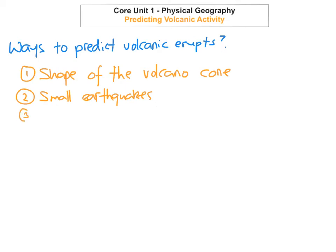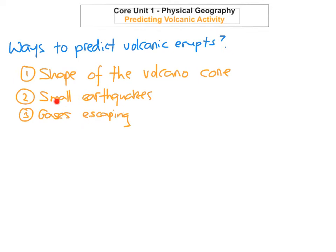The third way is by looking at gases. If there are any gases escaping out through the crater of the volcano, this may indicate that the volcano is about to erupt. As the volcano is about to erupt, the magma will move through the vents and towards the crater, causing lots of gases like sulfur dioxide and steam to push out through the volcano. If more gases are coming from the crater, this is a big indication that a volcanic eruption may occur.